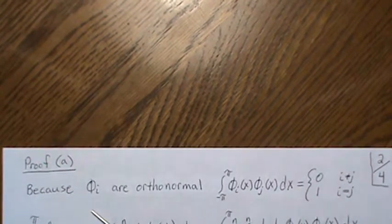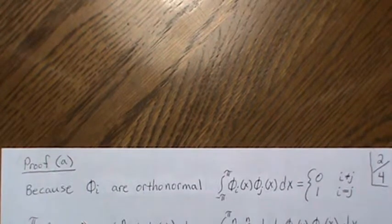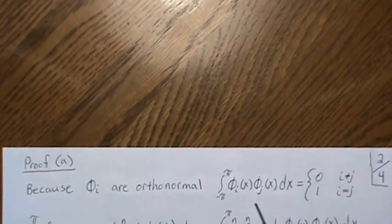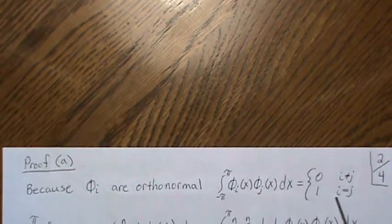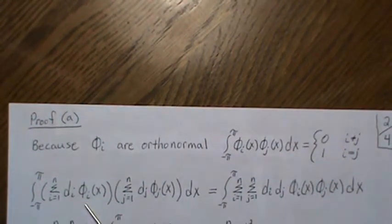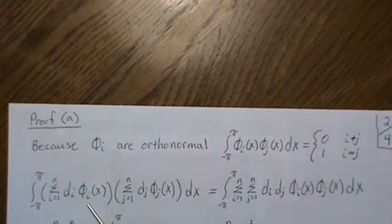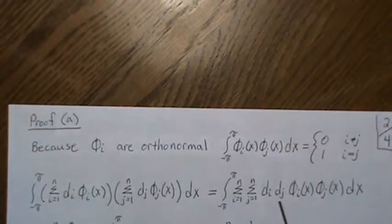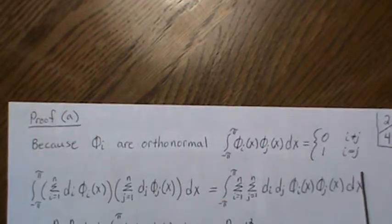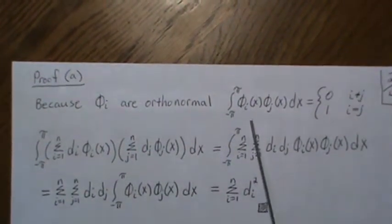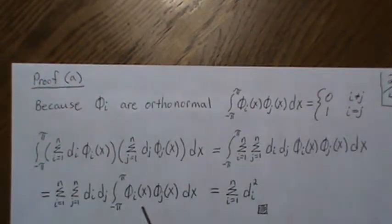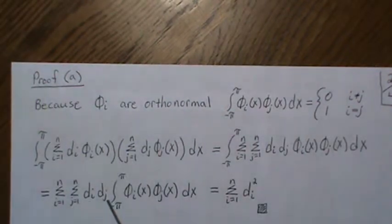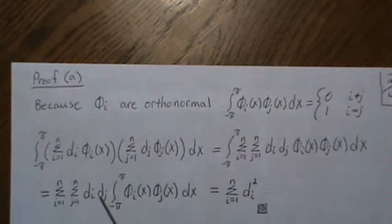Proof A: T_N is a linear combination of our orthonormal vectors using arbitrary constants D. Because the phi_i's are orthonormal, the inner product is zero when i and j are different, and one when they're the same. Looking at the inner product of T_N(x) with T_N(x), since the integral is a linear operator we bring it inside, and by orthonormality the cross terms vanish. Only terms where i equals j survive, giving us the sum of D_i squared.